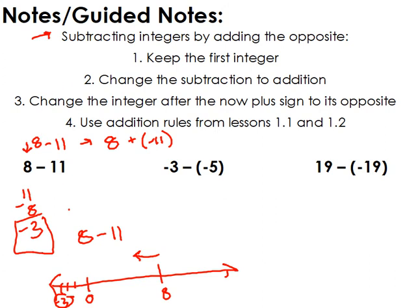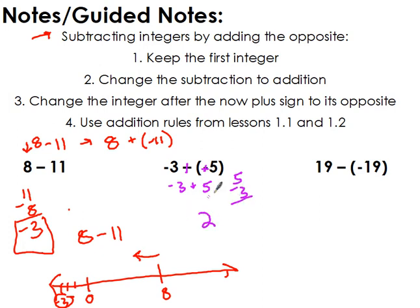Let's look at another example. If I have negative 3 minus negative 5, I have a minus a negative. I add the opposite by changing the subtraction symbol to addition, then change the sign of the second number — negative becomes positive — so it's negative 3 plus positive 5. Now I follow addition rules: different signs means subtract and keep the sign of the larger number. 5 is bigger than 3, so the answer is positive 2.